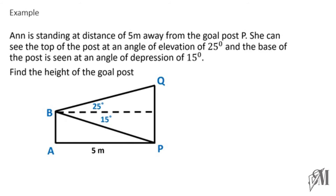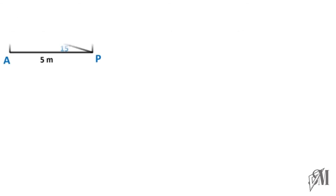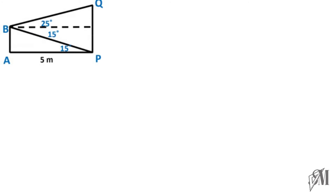You have to understand that this angle of depression of 15 degrees and the angle at the base are alternate angles, because the eye level is parallel to the ground. Since these two lines are parallel, these two angles are alternate angles — therefore I can mark 15 degrees at that point as well. This is important to draw the scale diagram correctly.